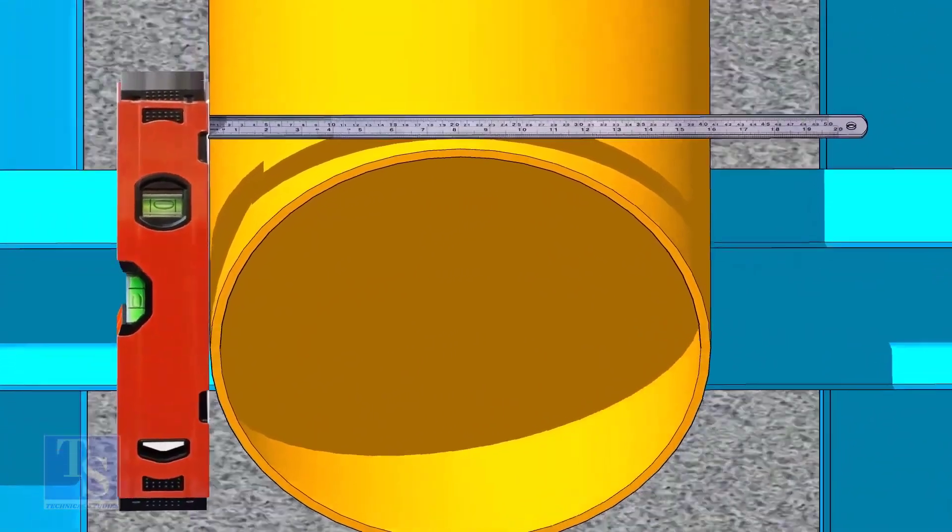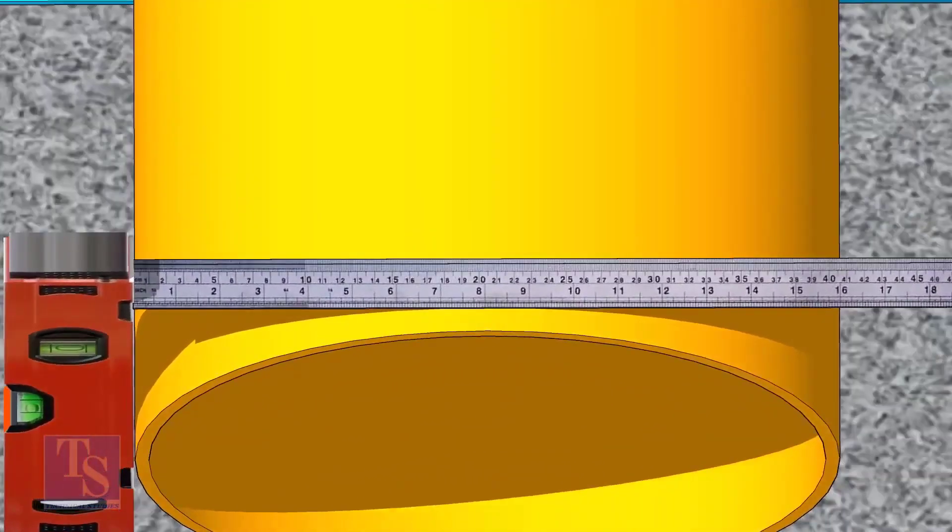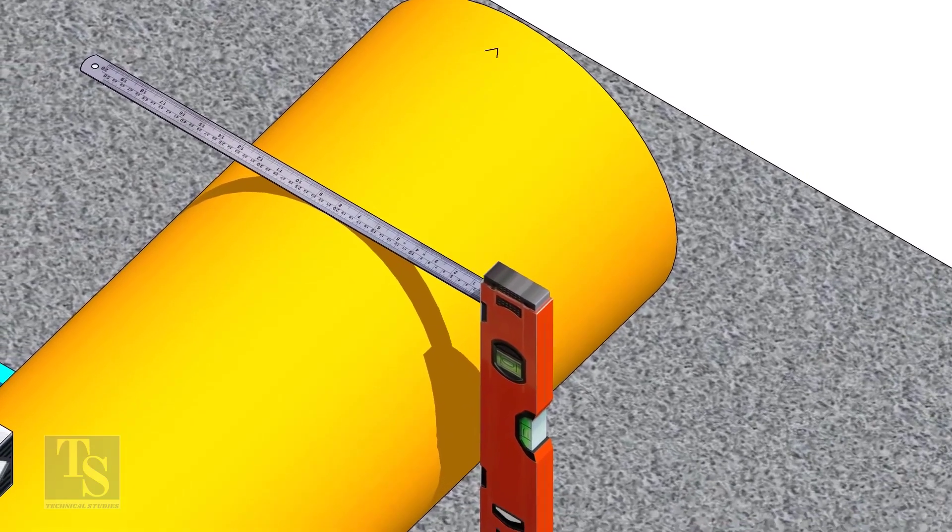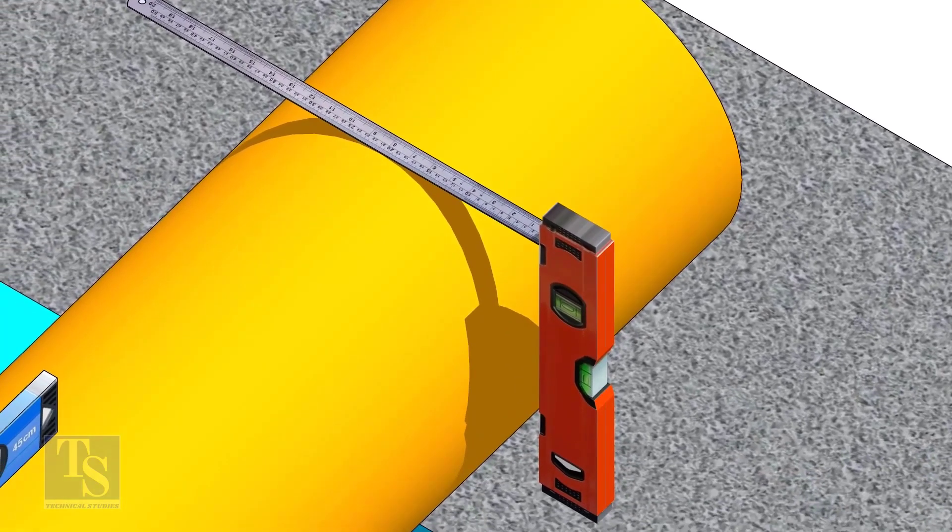Mark half OD at 300mm apart. This pipe OD is 406mm, so mark 203mm from the vertical level bottle on the top of the pipe. And draw a line connecting these marks.